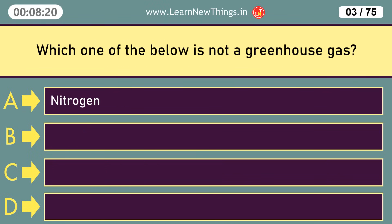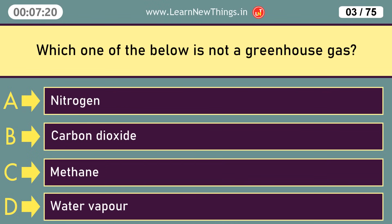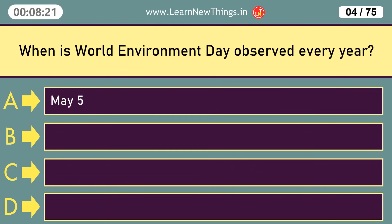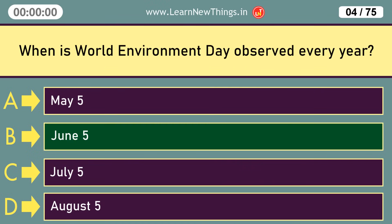Which one of the below is not a greenhouse gas? Nitrogen. When is World Environment Day observed every year? June 5.